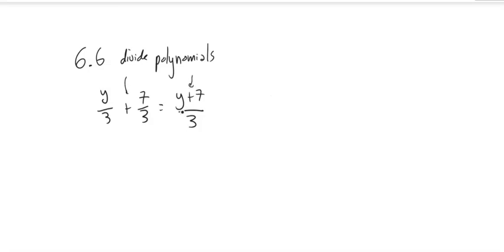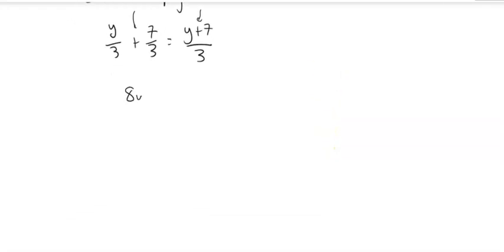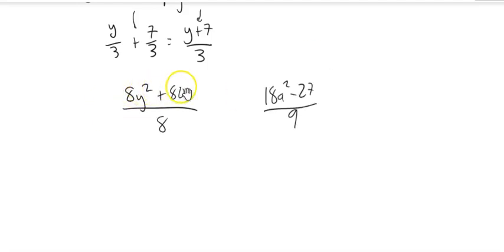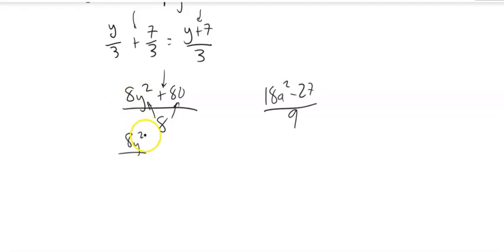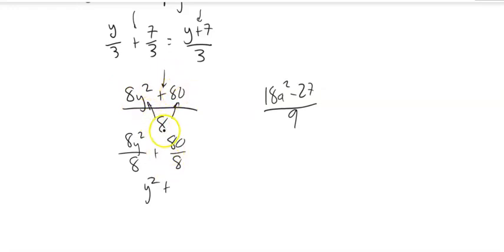So when we have addition or subtraction going on in the numerator, we've got to think about it a little differently. Take something like (8y² + 80) divided by 8. Notice we have addition separating out those two terms — this is a binomial, two terms. Both pieces are being divided by that 8. So if I divide 8y² by 8, that's y², plus 80 divided by 8 is 10.